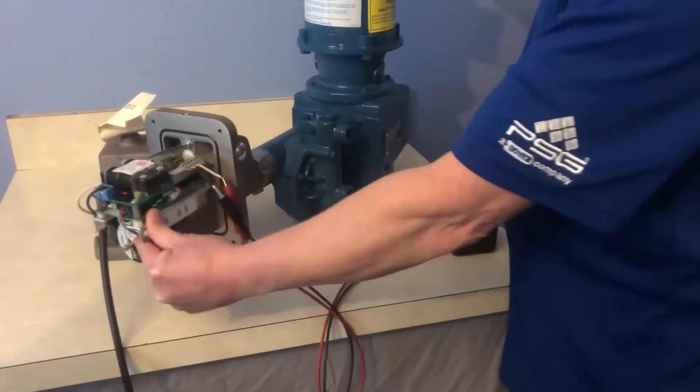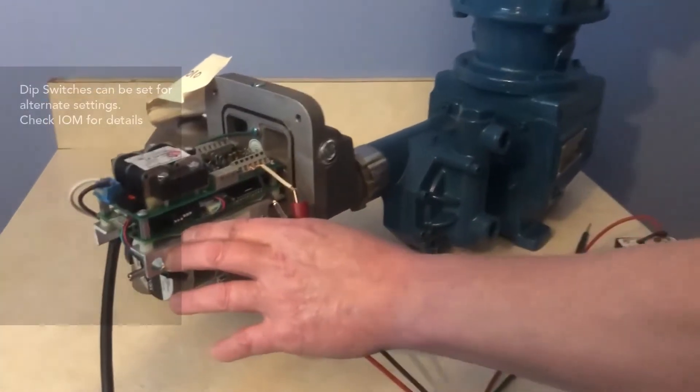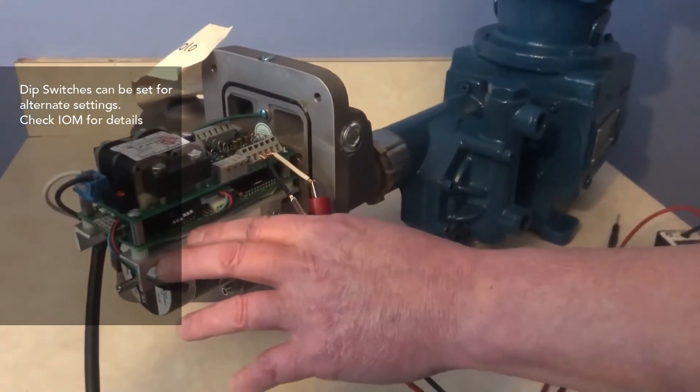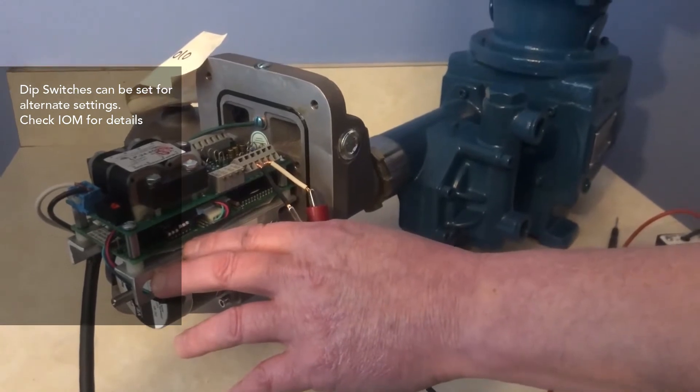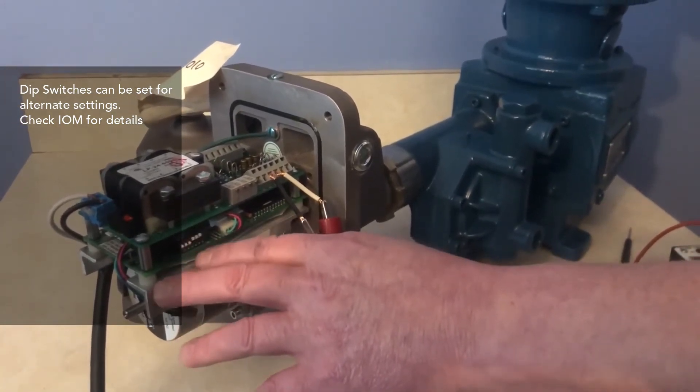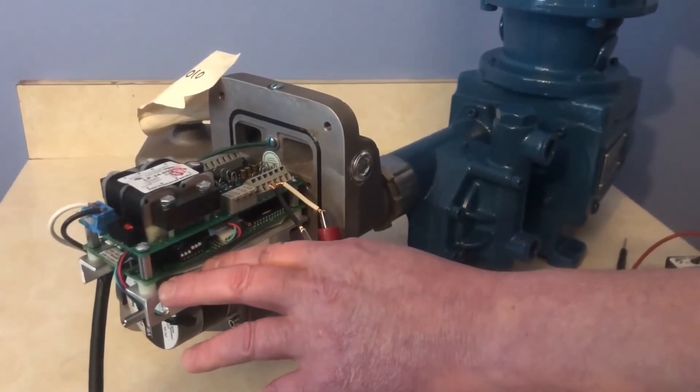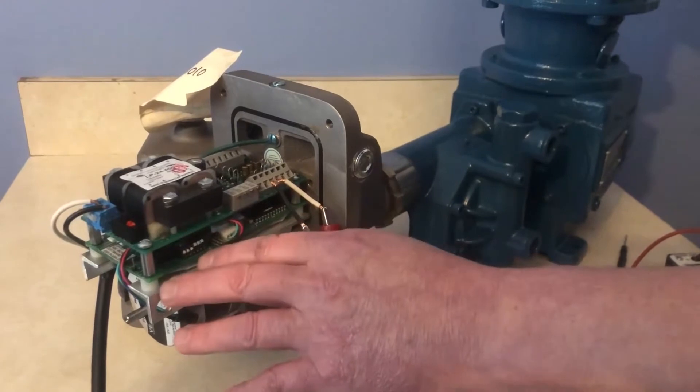Over on this side, you'll see dip switches. Dip switches are already preset from the factory for four milliamp being zero point or zero stroke on the pump, or 20 milliamps, which is the maximum or the max flow on the pump.